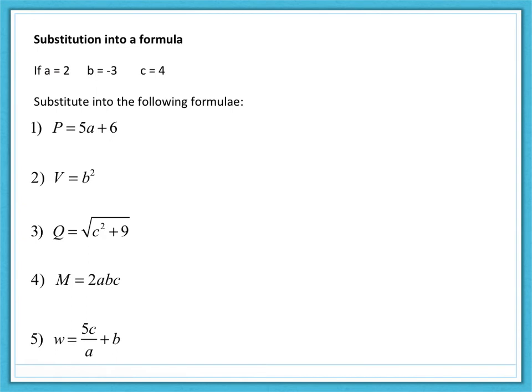So as well as substituting into expressions, we can also substitute into formulae. So have a look at these. Now, these are formulae rather than expressions because they involve an equal sign. And you will always see that in a formula, it allows you to calculate the value of something. So this formula here allows us to calculate the value of p. Now, again, we're using three letters, a, which is equal to two, b, which is equal to negative three, and c, which is equal to four.